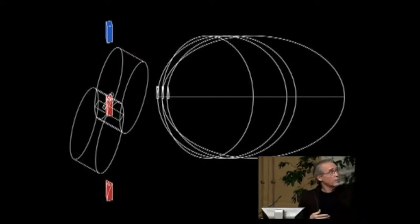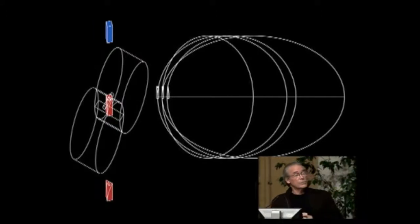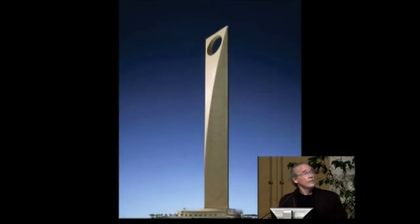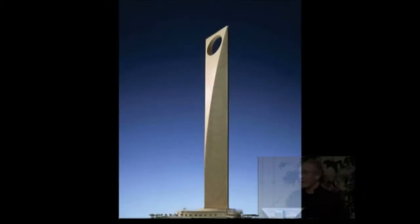We have two fundamental programmatic components: a hotel at the top, and at the base, office structure. There are many other components as well, but those are the two fundamental driving geometries. This building was presented to the Chinese authorities in 1993.